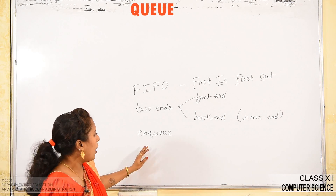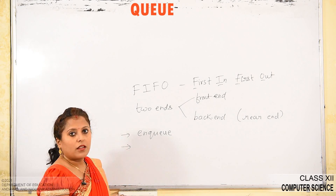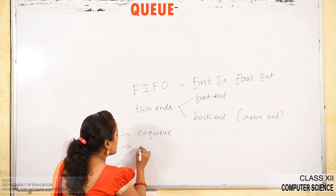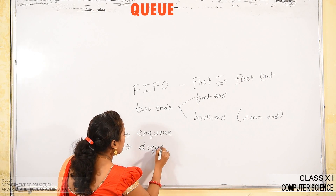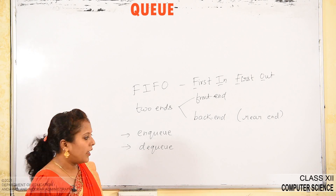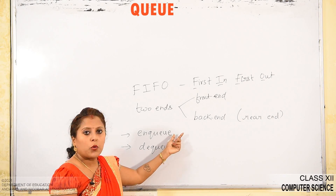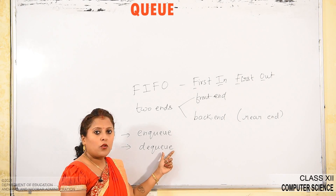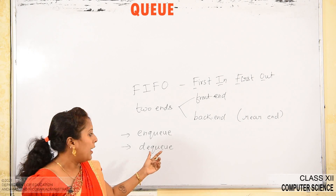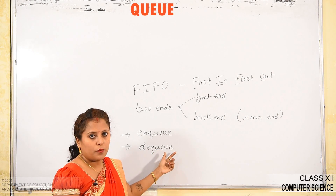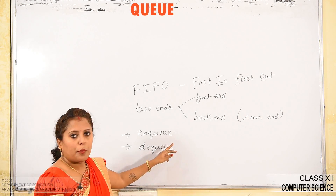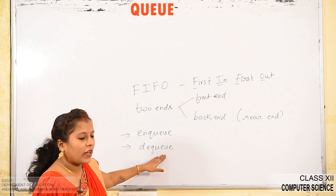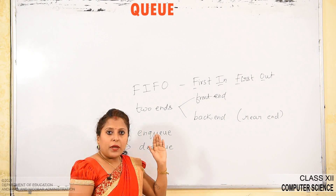The two operations — insertion and deletion — can be performed in a queue as well. When you insert any element into a queue, that operation is called enqueue (NQ), just as stack had push. When you remove any element from the queue, that operation is called dequeue (DQ), just as stack had pop.